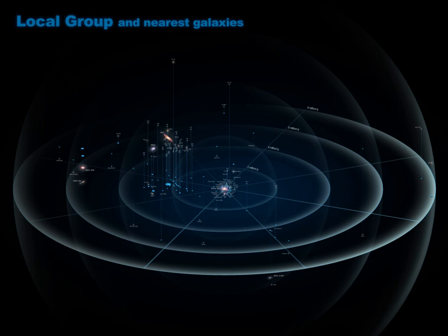The local sheet in astronomy is a nearby extragalactic region of space where the Milky Way, the members of the local group, and other galaxies share a similar peculiar velocity.